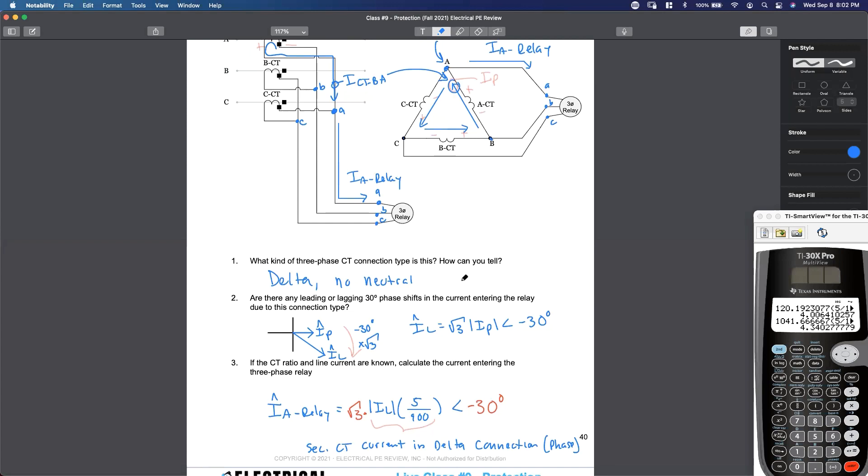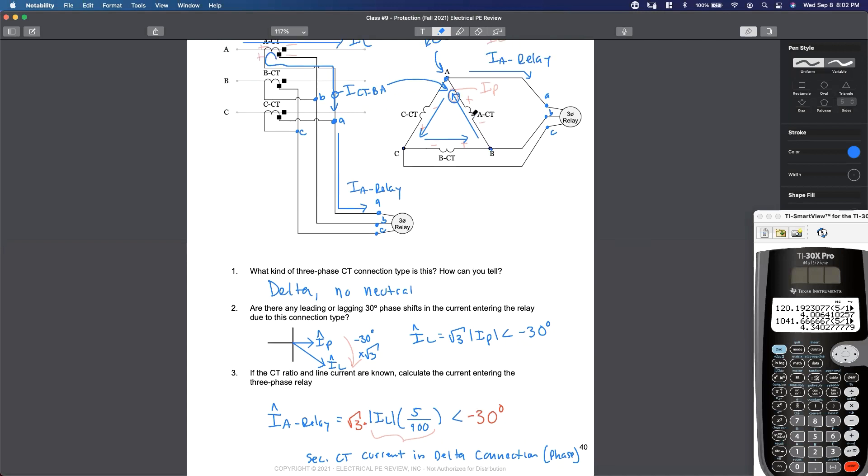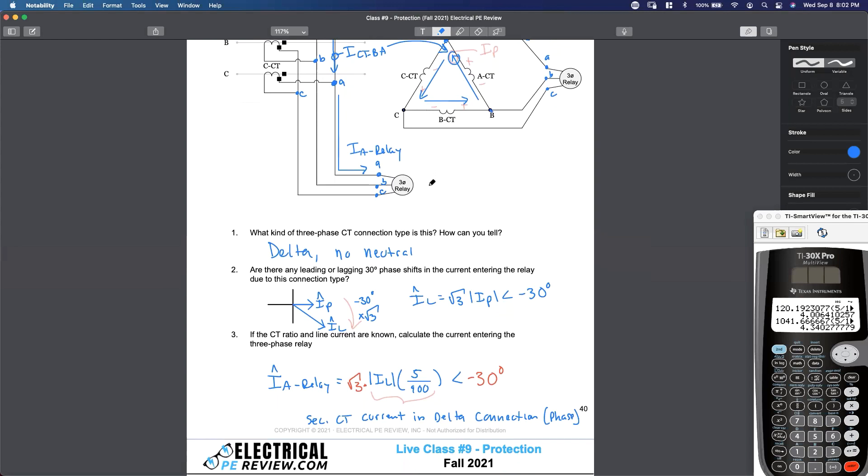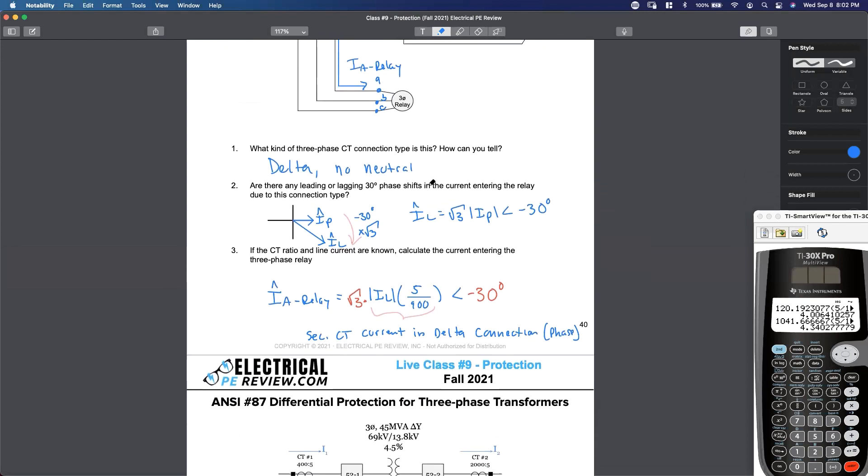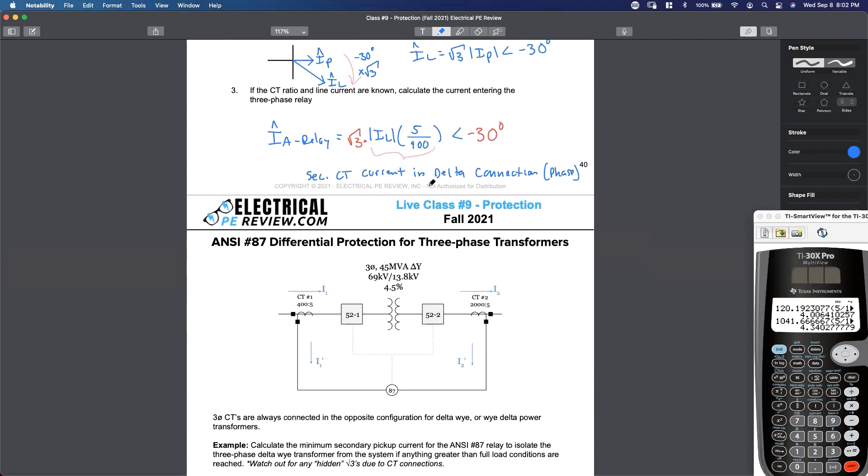All right. So now, Mo said, shouldn't it be I phase then? This is I phase right here. From here to here, right? From here to here is your secondary CT delta phase current. When we multiply these secondary CT delta phase current by the square root of three, and we lag it by 30 degrees, now we just left the delta connection, and now we're entering the relay. Let's see how this applies to differential protection of a three-phase transformer.